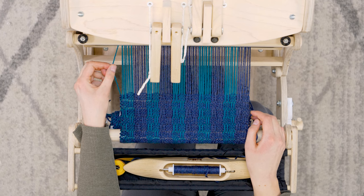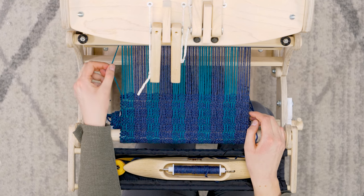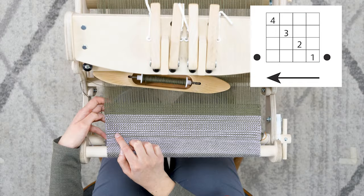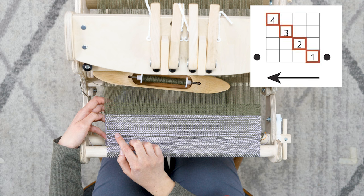A floating selvage is only used on the far right and left. In this draft we used numbers to indicate the shafts. Other pattern writers use an X, a dot, or some other symbol. If a project uses different warp colors or yarns, the threading may also indicate that.